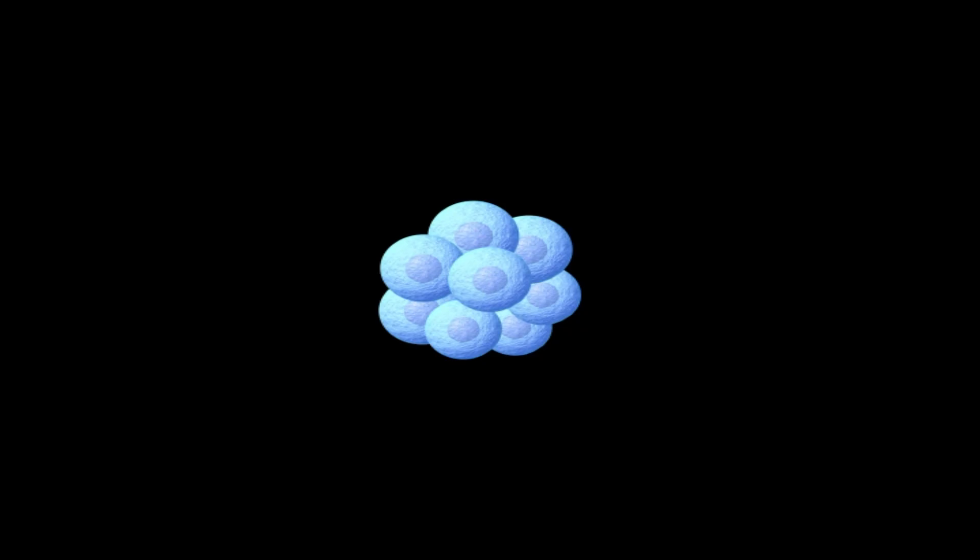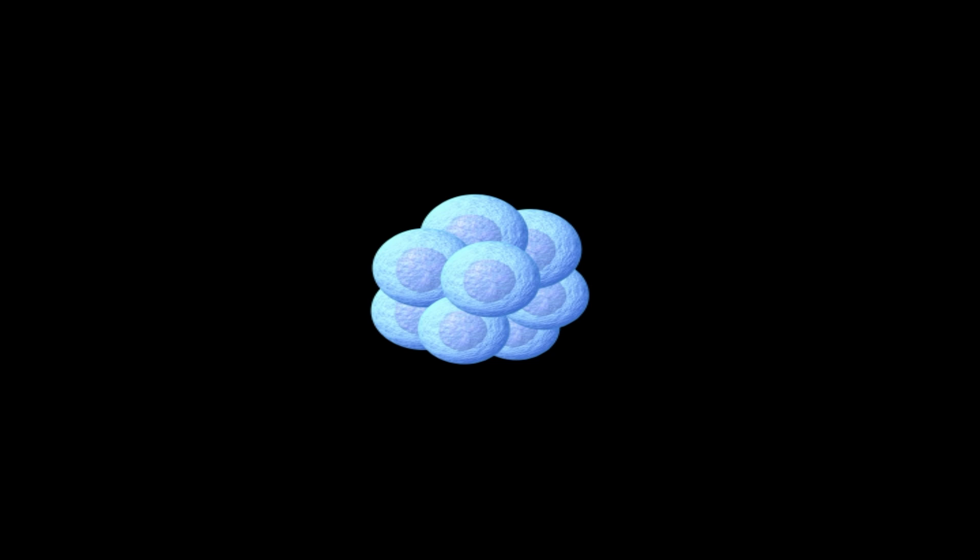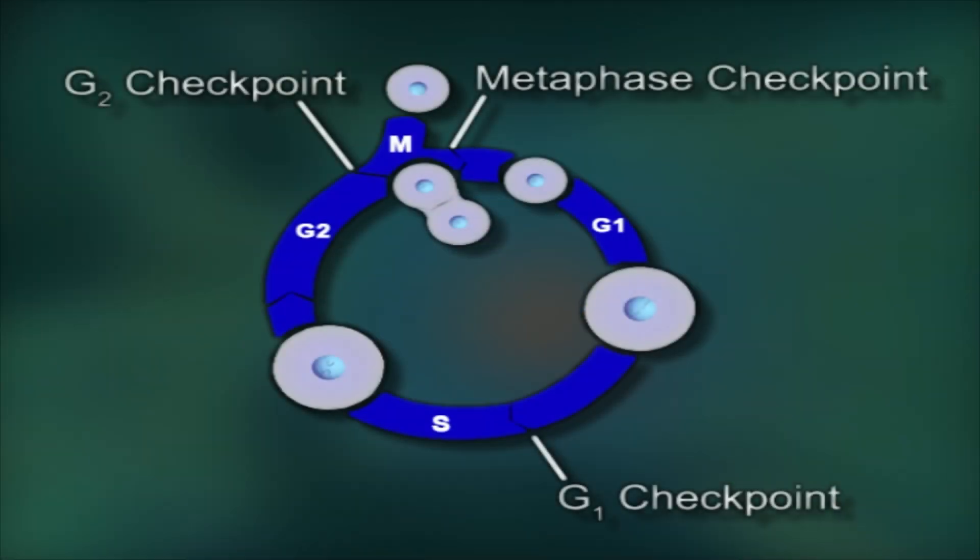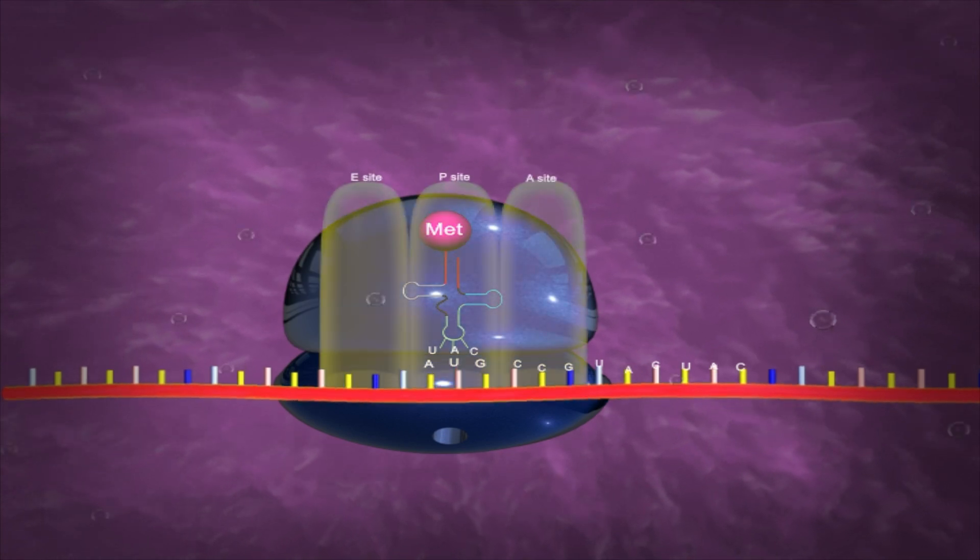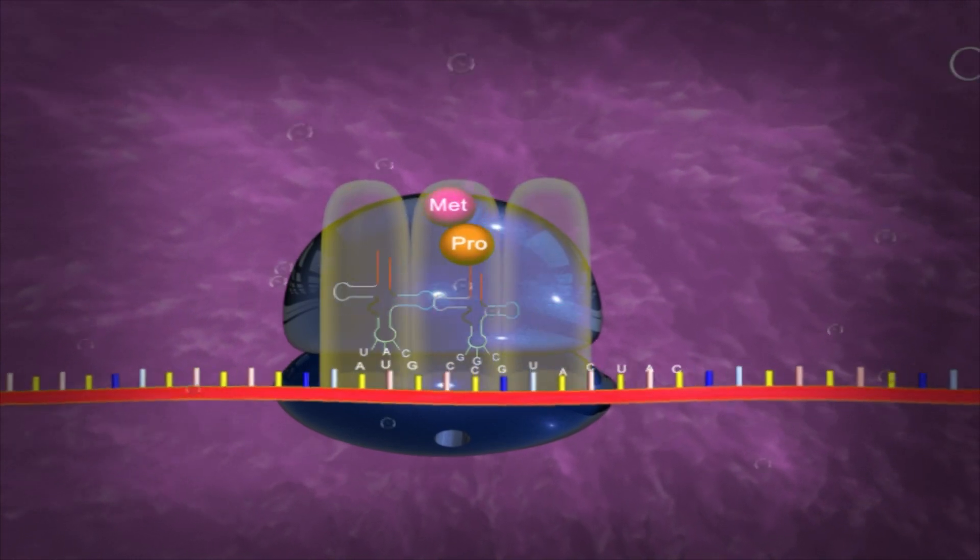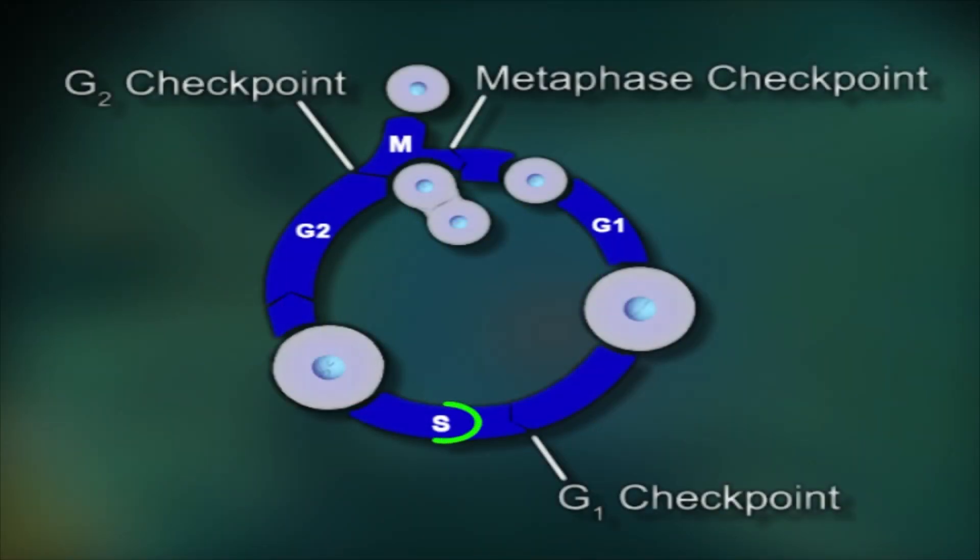During the interphase, the cell prepares for cell division. The three phases of interphase are: G1 or GAP1 phase where the cells synthesize cellular contents, excluding the genetic material, preparing the cell for division.